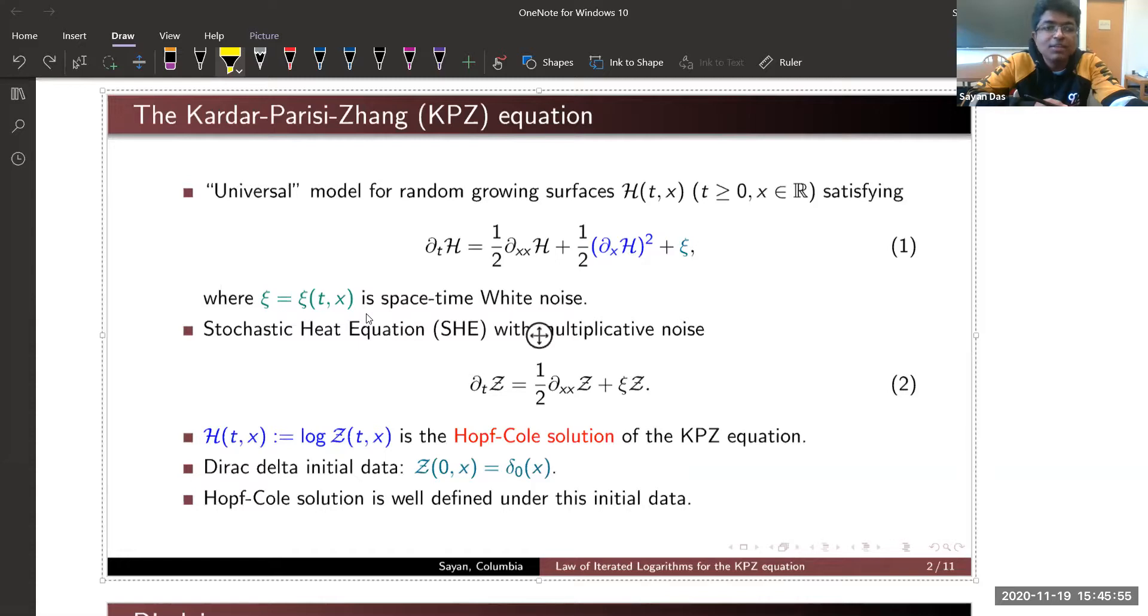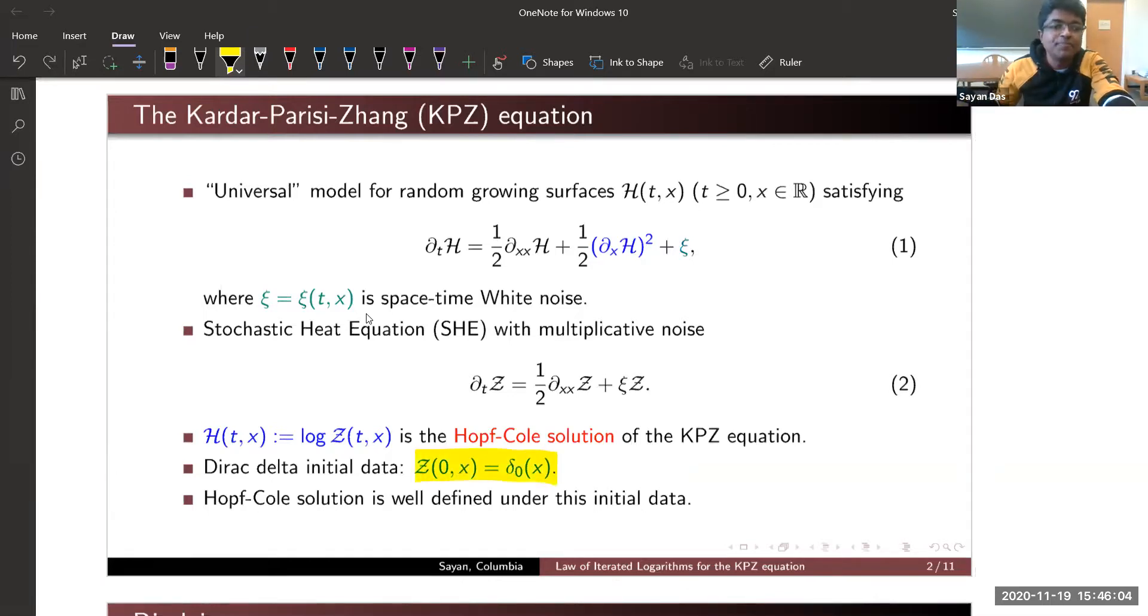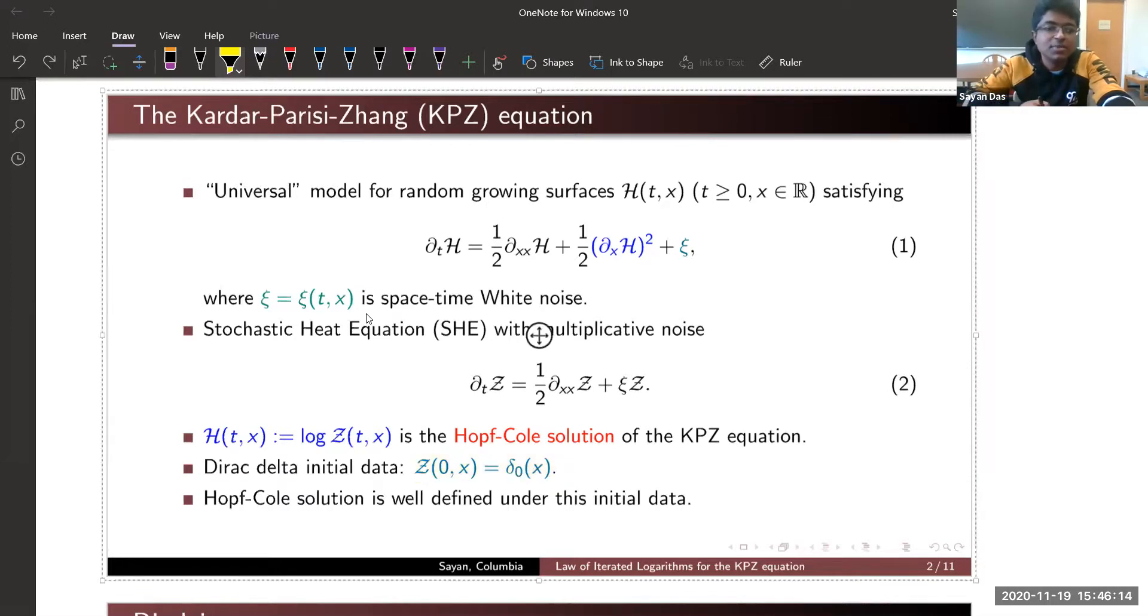Since I am dealing with a partial differential equation, I need to specify what is my initial data. I'll be dealing with Dirac initial data, and one can show that z(t,x) is always strictly positive for this initial data, so taking logarithm is well defined.